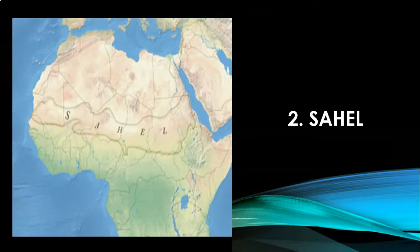The Sahel stretches east-west for a distance of 4,000 kilometers and covers an area of 3 million square kilometers. It is largely a semi-arid belt of barren, sandy, and rocky land. This region marks the physical and cultural transition between the more fertile tropical region in the south and the desert in the north.